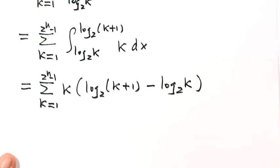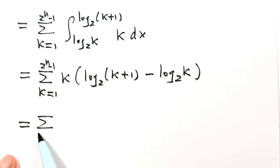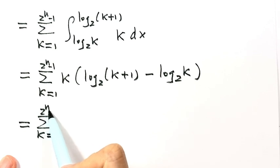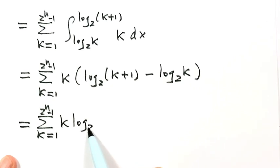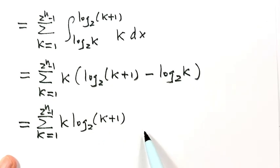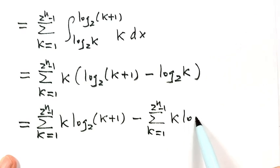Next, let's separate this sum into two parts. The first part is the sum of k times log base 2 of k plus 1, and the second sum is the sum of k times log base 2 of k.